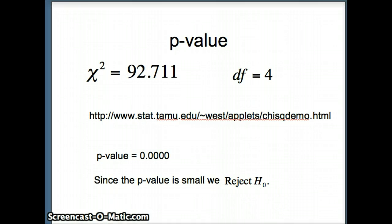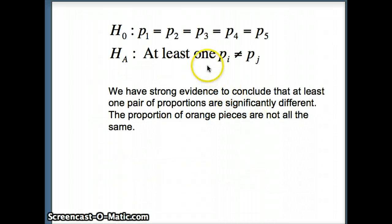Now, we have to think about what that really means. If we look at our H₀ and our Hₐ, our H₀ stated that all of the proportions had to be the same. It stated that the proportion of orange pieces had to be the same each time these five boxes were produced.